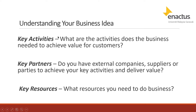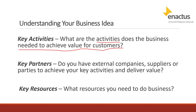The first things we'll cover are key activities, key partners, and key resources. Key activities are what the business needs to do to achieve value for the customer — for example, if you're doing an F&B business, how you cook or present your meals. Key partners are the companies that help you — for example in F&B, who are your food suppliers providing ingredients to help you achieve your key activities.